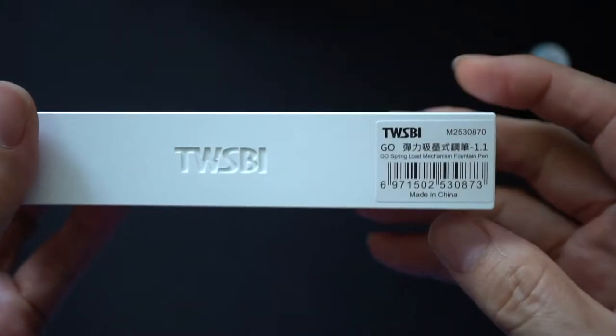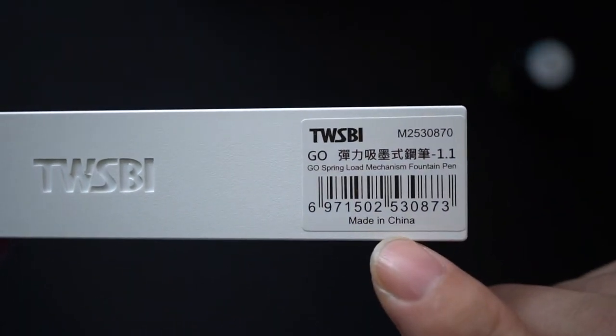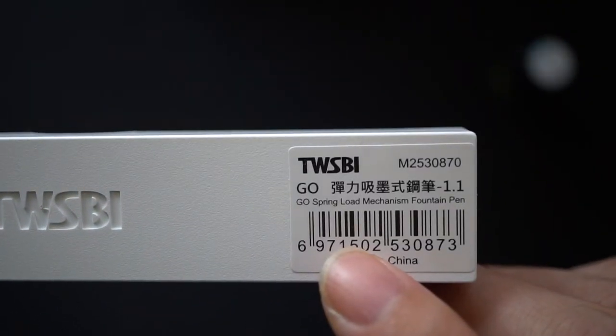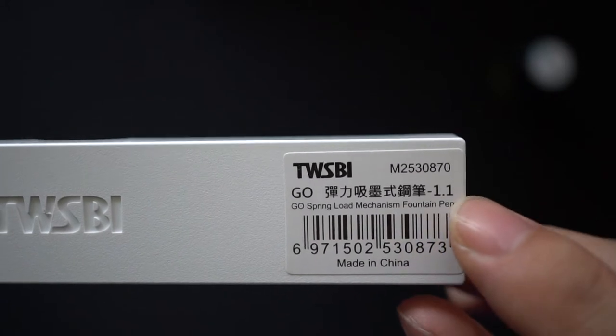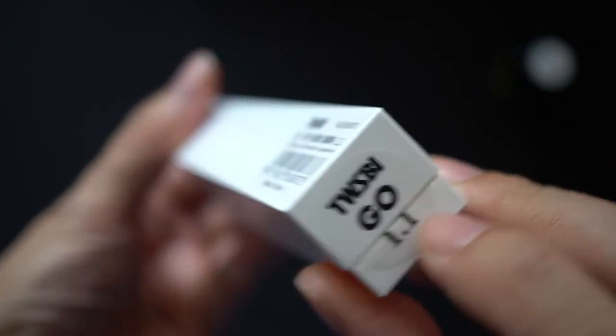Just before I open the box, this is what the label says. It just says Twisbee Go spring load mechanism. And as you'll notice, I got the 1.1mm stub.